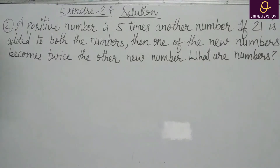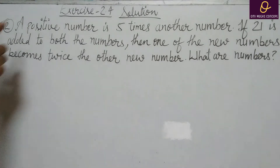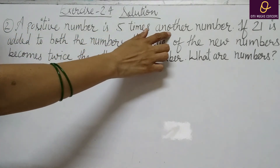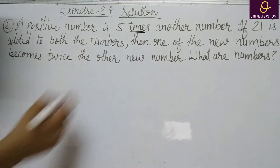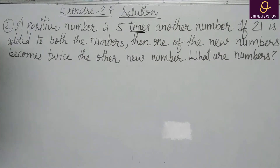Now next question — Question number 2. A positive number is 5 times another number. If 21 is added to both the numbers, then one of the new numbers becomes twice the other new number. What are the numbers? अगर आपको यह पता करना है कि कौन सा number let करना है, तो जो times होता है — times के right hand side में जो भी आया, वो आप let करेंगे. तो right hand side में क्या है? Another number.